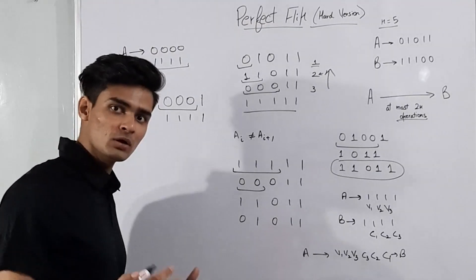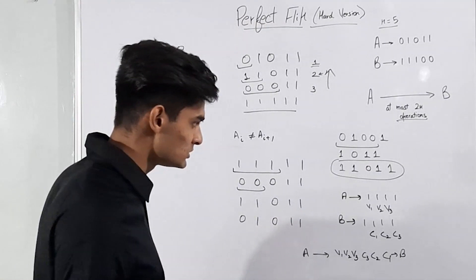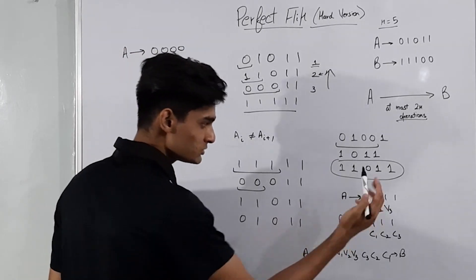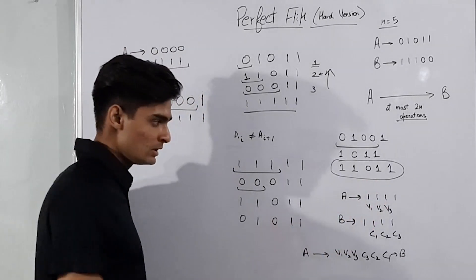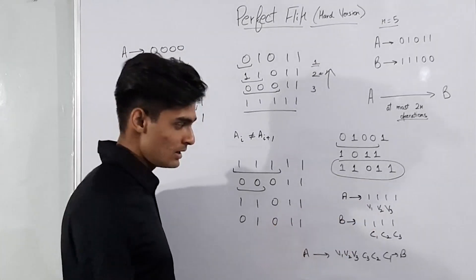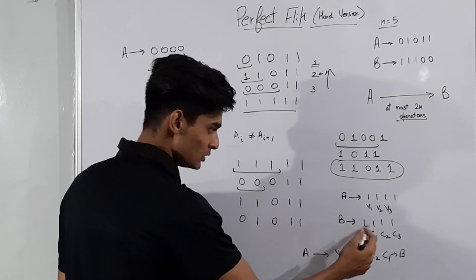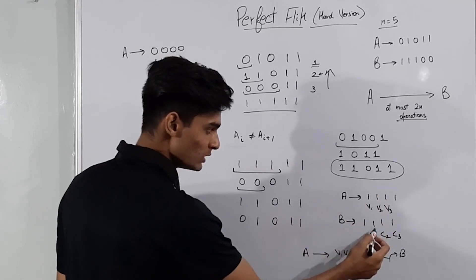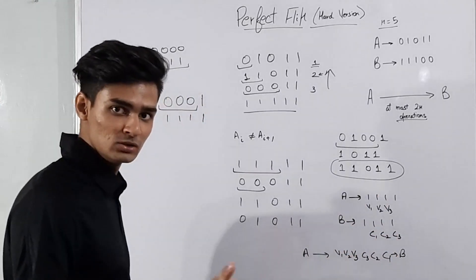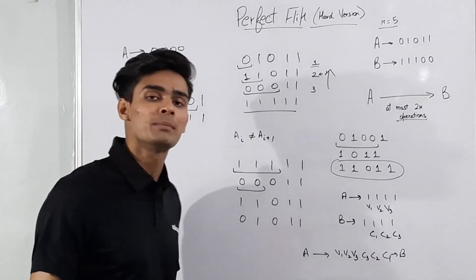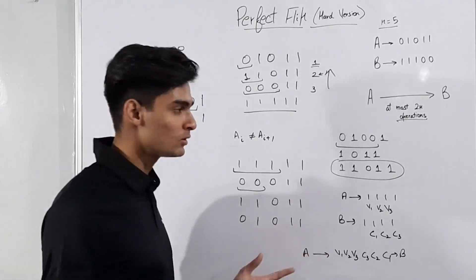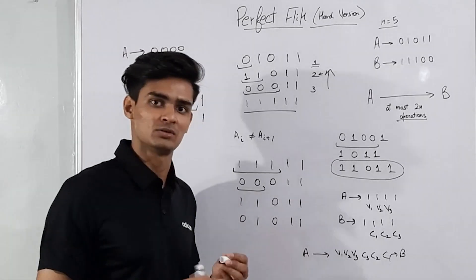Now let's look at the complexity. For converting a to a string of all 1s we make at most n operations, and for converting b to a string of all 1s we also make at most n operations. So the total complexity is O(2n), which is the desired complexity for this solution.